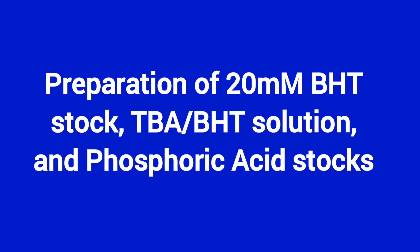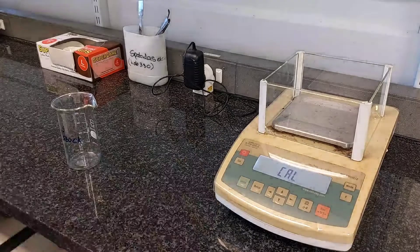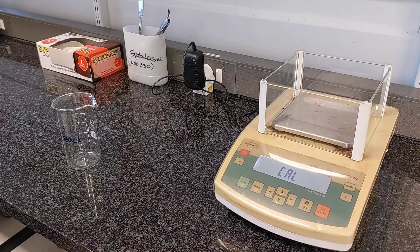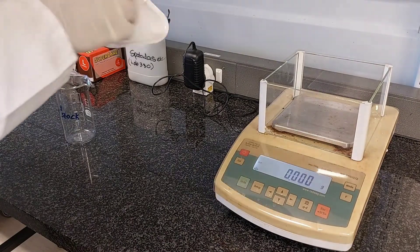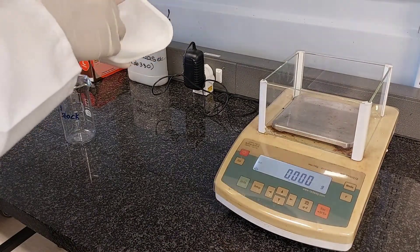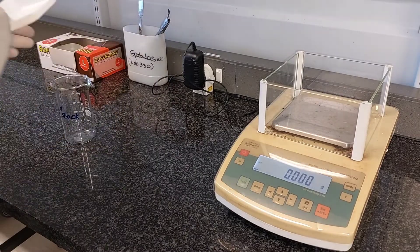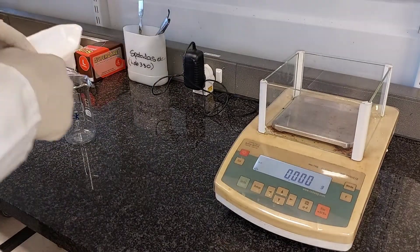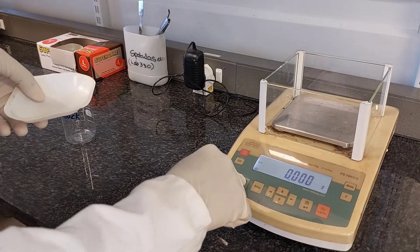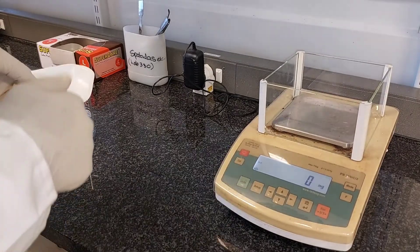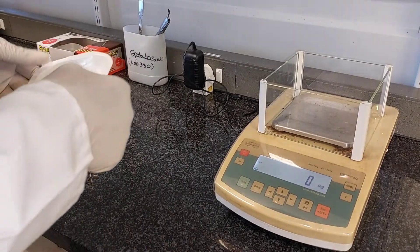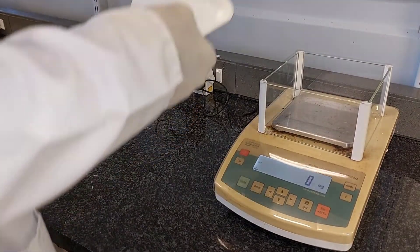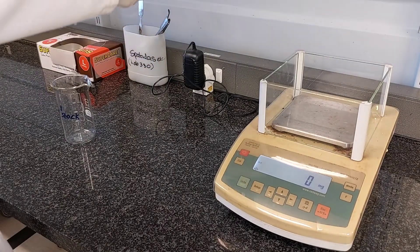Prepare the stocks and solutions according to the protocol manual. Calibrate the scale and follow the steps by adjusting it to the appropriate unit, depending on what you are weighing at that particular time, whatever is of interest. Calibrate the scale and then start weighing all your products.